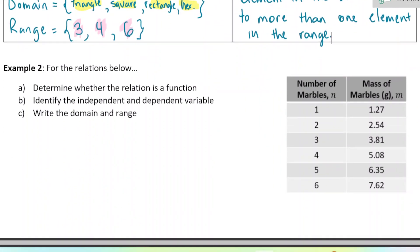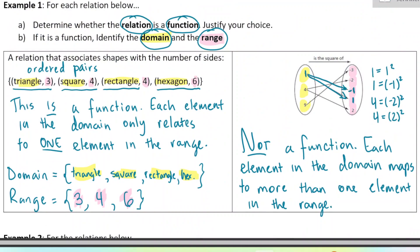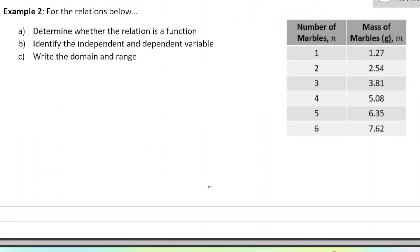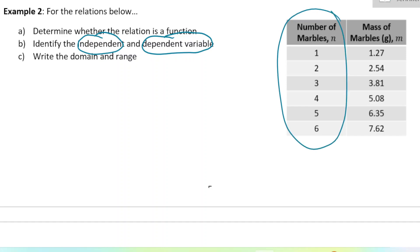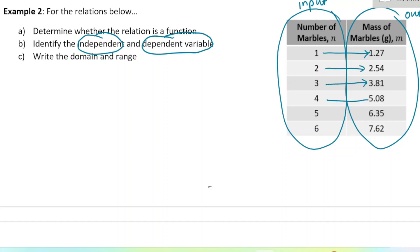Let's look at Example 2. Here's another way to represent a relationship — a table. So far we've seen functions represented as ordered pairs, arrow diagrams, and now a table. You could also use a graph or words. The question says: determine whether the relation is a function. Looking at the table, each input maps to exactly one output — each element in the domain maps to one element in the range. So yes, this is a function.